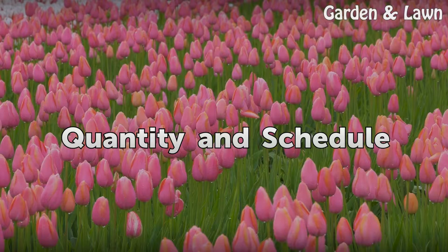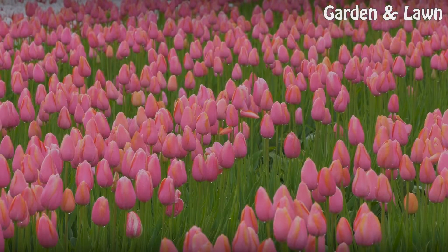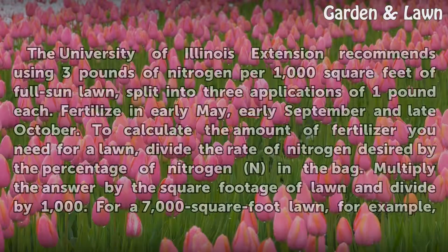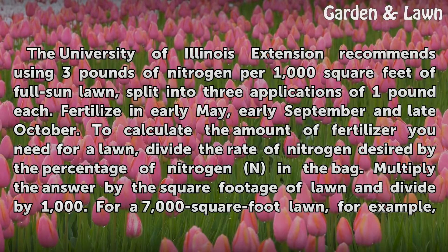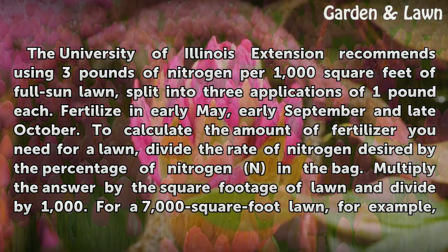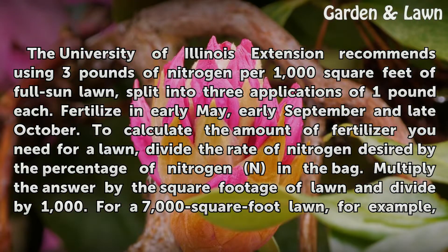The University of Illinois Extension recommends using three pounds of nitrogen for one thousand square feet of full sun lawn, split into three applications of one pound each. Fertilize in early May, early September, and late October. To calculate the amount of fertilizer you need for a lawn, divide the rate of nitrogen desired by the percentage of nitrogen in the bag.